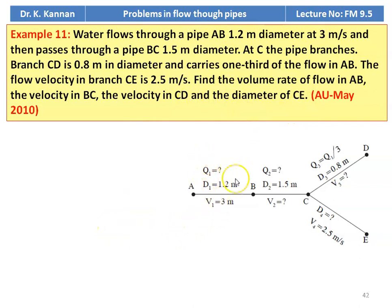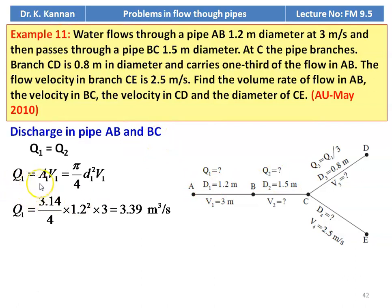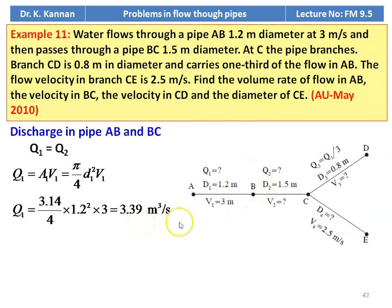Here we calculate discharge, velocity and discharge, diameter, and velocity. Discharge in pipe AB equals BC, so Q1 equal to Q2. Q1 equal to A1 V1, which is pi by 4 D1 square into V1, equal to 3.14 divided by 4 into 1.2 square into 3, equal to 3.39 meter cube per second. So Q1 equal to Q2 equal to 3.39 meter cube per second.